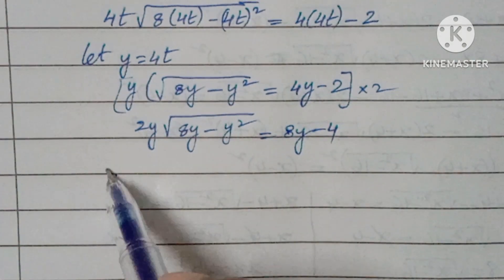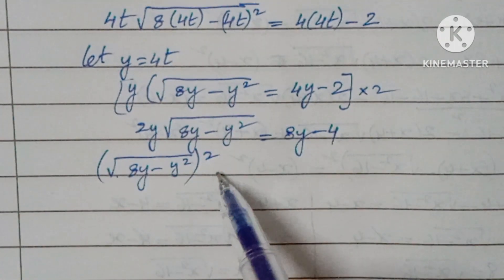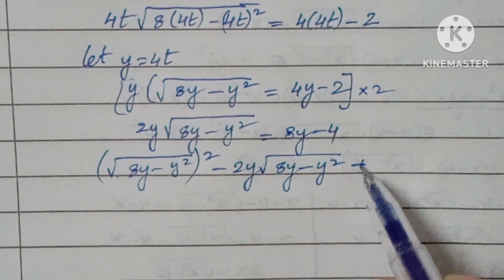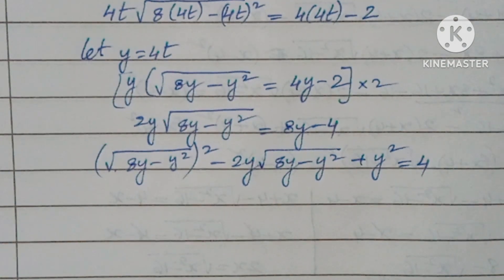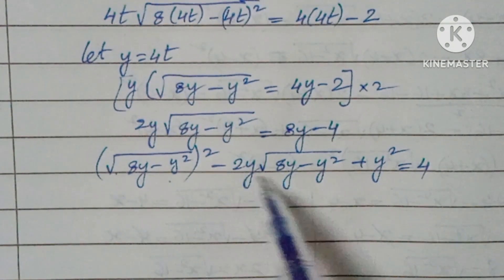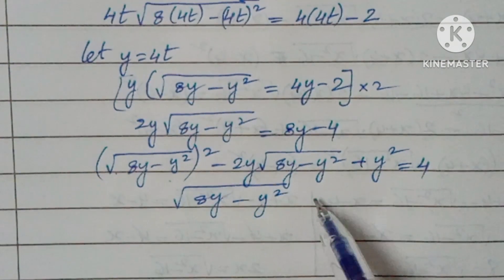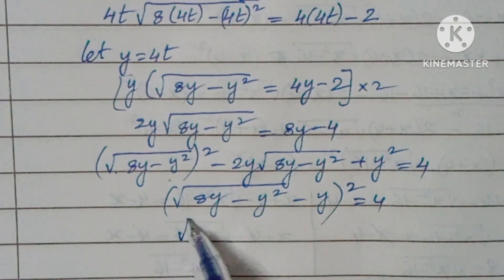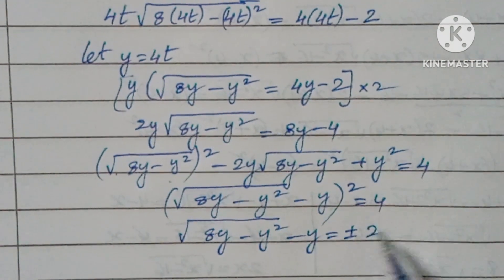Doing some adjustment: (8y minus y squared) minus 2y into square root of (8y minus y squared) plus y squared equals 4. We are adding and subtracting some values so the equation does not change. This brings it into the form (a minus b) squared, giving us: square root of (8y minus y squared) minus y, whole squared, equal to 4.